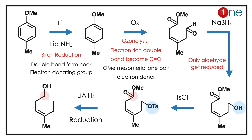The key concept you have to learn here is Birch reduction. In Birch reduction, the double bond forms near the electron-donating groups.